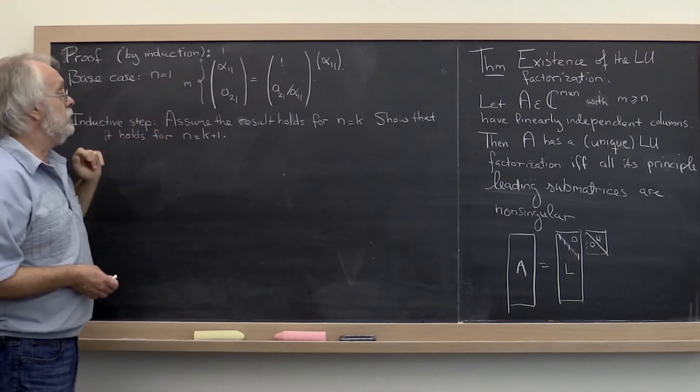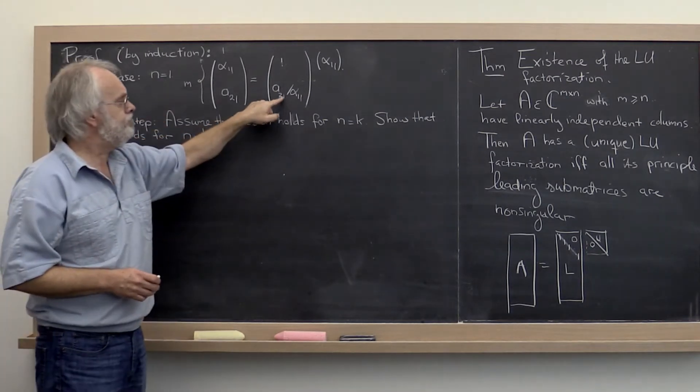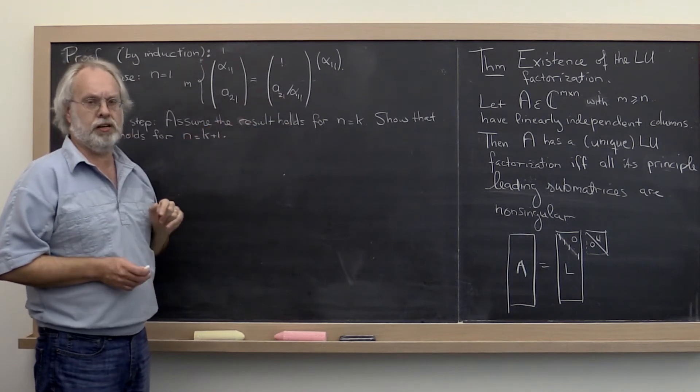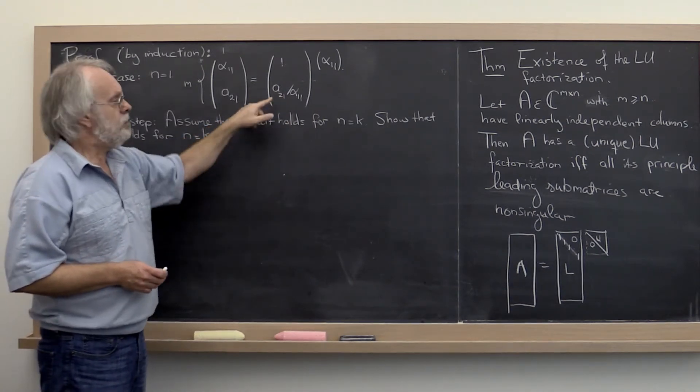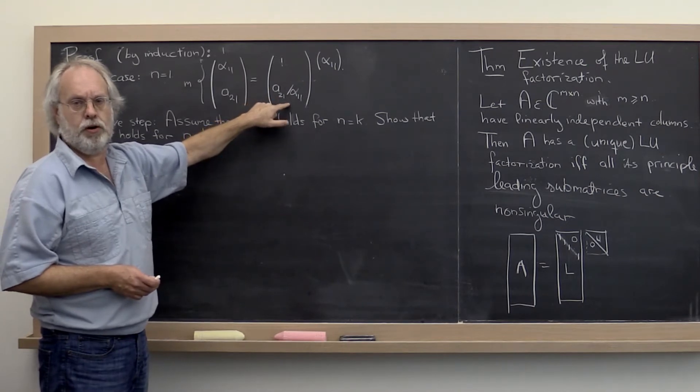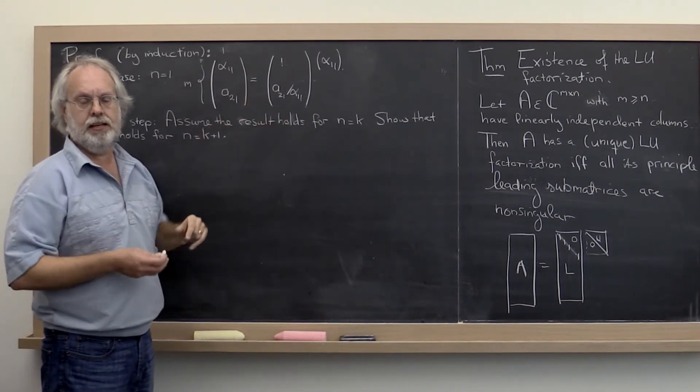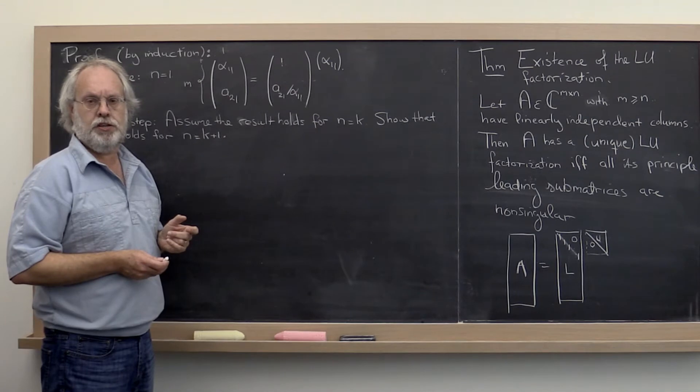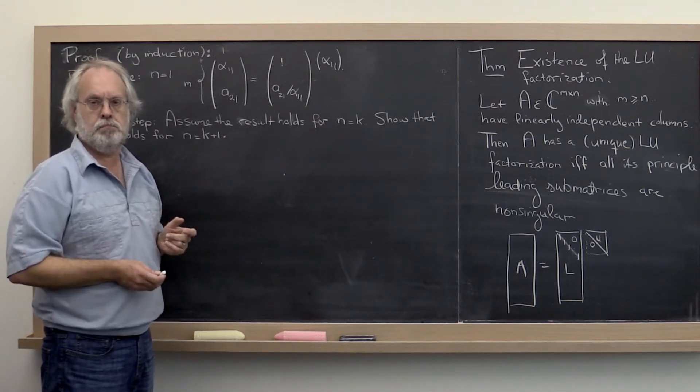And now we need to move on. Before we move on, where have we seen this before? We've seen that before when we computed the multipliers, right? We saw that as part of a step in the LU factorization algorithm from the last unit. Interesting.